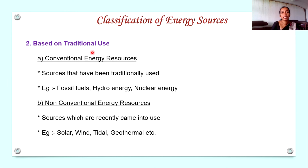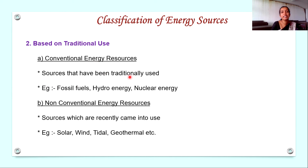The next classification is based on traditional use — whether these resources are conventionally being used or were introduced recently. Based on that, there are two classifications: conventional energy sources and non-conventional energy sources. Conventional energy resources are those sources that have been traditionally used, such as fossil fuels, hydro energy, and nuclear energy. Non-conventional energy resources are those introduced recently and came into use recently — examples are solar energy, wind energy, tidal energy, and geothermal energy.